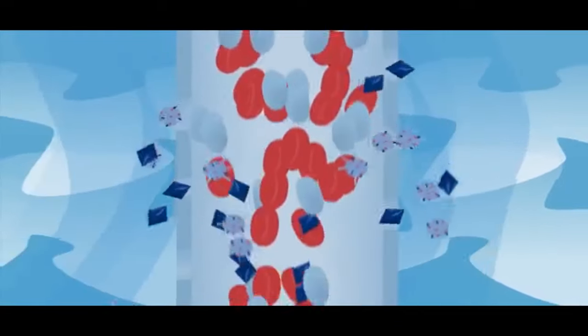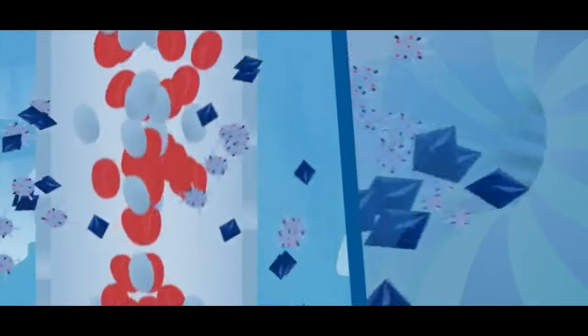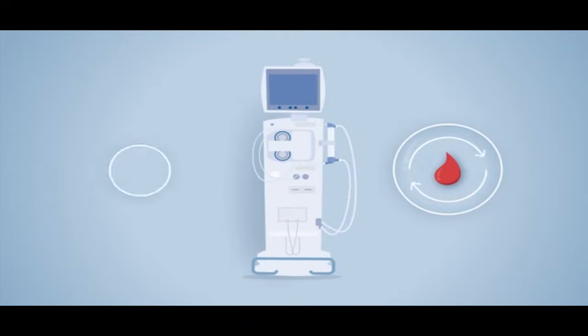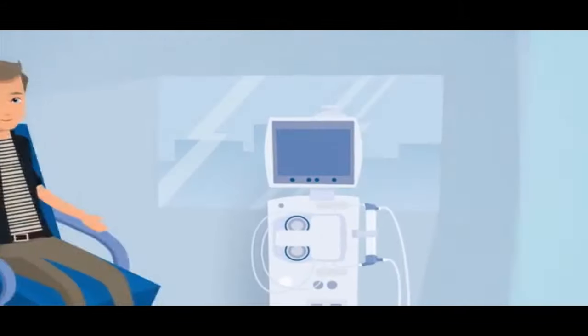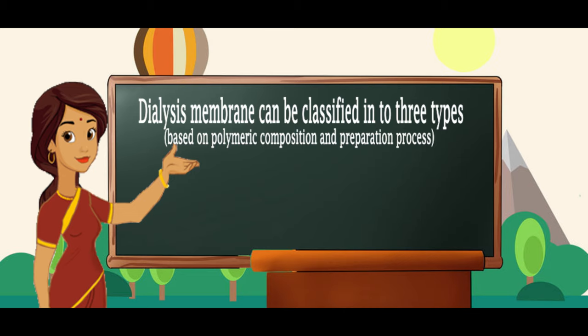The opposite side of the membrane is washed with an electrolytic solution called dialysate containing the normal constituents of plasma water. The dialyser filters metabolic waste products from the blood and then returns the purified blood to the person. Dialysis membranes can be classified into three types based on their polymeric composition and preparation process: regenerated cellulosic membrane, modified cellulosic membrane and synthetic membrane.